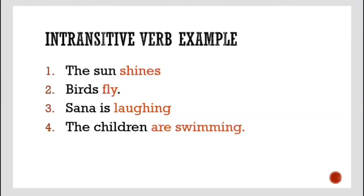Examples of intransitive verbs: The sun shines — it is shining, but how much is not mentioned. Birds fly — all birds fly, no certain birds are specified. Sana is laughing — laughing is the verb, and there is no object mentioned on what topic. Children are swimming — swimming is the verb, and no object is required.